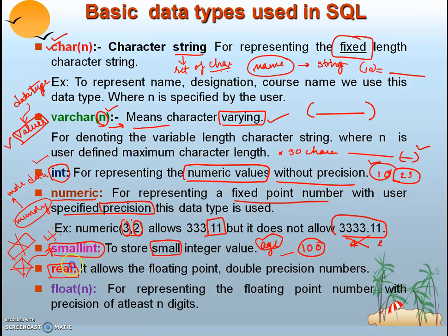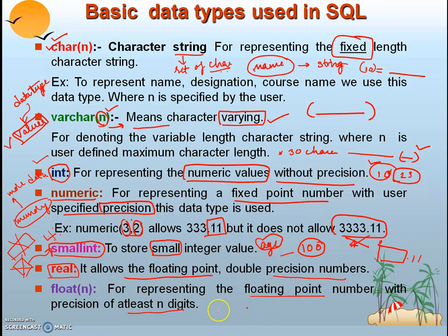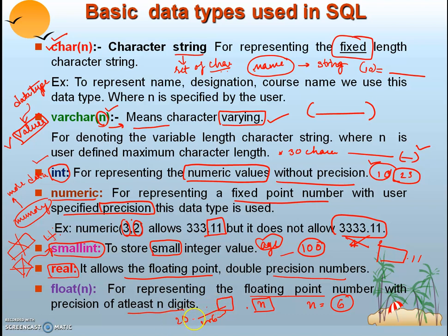The next type is REAL, which allows a floating-point number with double precision — a maximum of two digits after the decimal point. After that is FLOAT(n), which also represents a floating-point number but with a precision of at least n digits after the decimal point. For example, if n is 6, a value like 20.something can have a maximum of 6 digits after the decimal point.